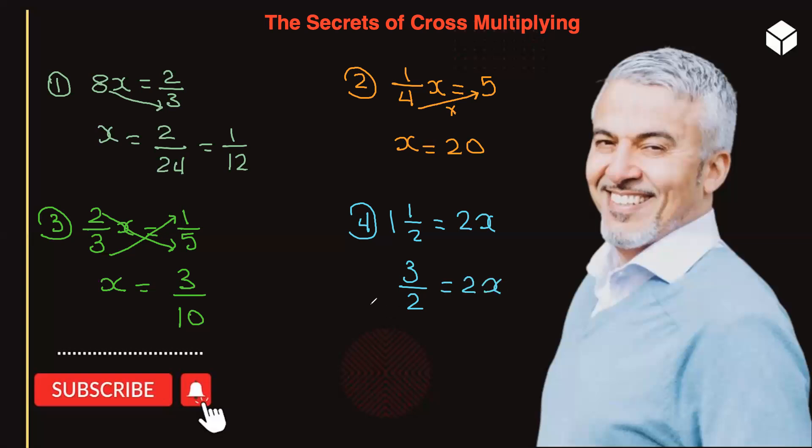Now, can we cross-multiply when the x is on the right-hand side? Of course, you can do that. So now the 2 is on top because everything is on top of 1. If it crosses, it goes to the bottom. It gets multiplied, of course. Cross-multiply. So you get 3/4 = x.